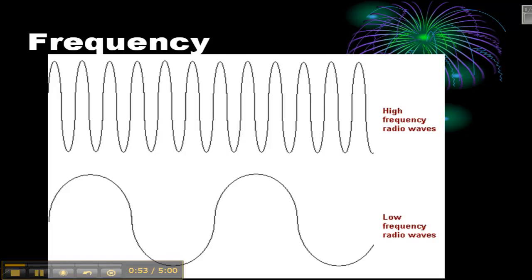Now frequency is how many wavelengths pass a certain point in a given time. So this top diagram is a high frequency radio wave. You can see that many peaks are going to pass a point in a second, whereas down here, the low frequency waves, you're just going to have a few compared to this one up here.